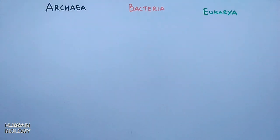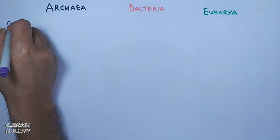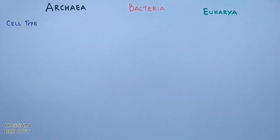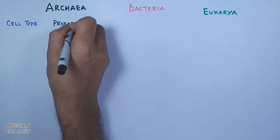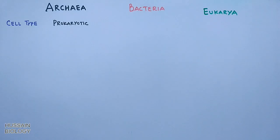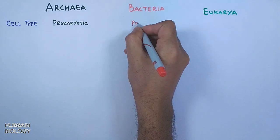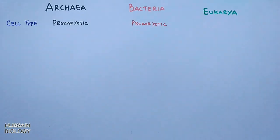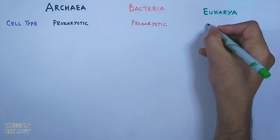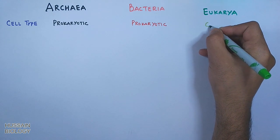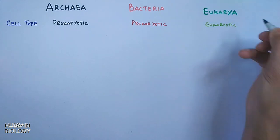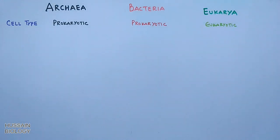First, we compare the cell type in all three domains. Archaea has a prokaryotic cell type, Bacteria also has a prokaryotic cell type, while the Eukarya domain has a eukaryotic cell type.